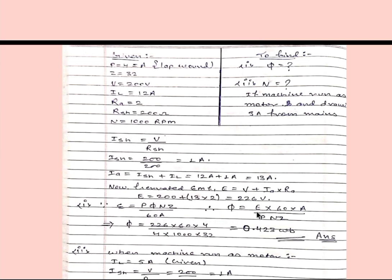Now generated EMF we know that EG equals PΦNZ divided by 60A. So from here we can get Φ equals E into 60 into A divided by PNZ. We will put value of all these terms and after calculating we will get 0.423 weber. This will be our first answer.